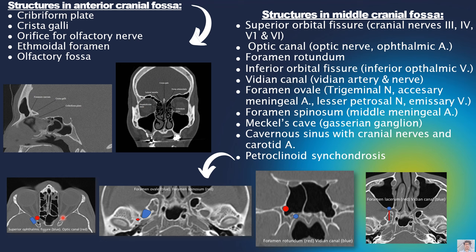The superior orbital fissure gives passage to the third, fourth, V1 division, and sixth cranial nerves. On axial CT section, the foramen ovale is shown in blue and foramen spinosum in red. The foramen ovale transmits the mandibular nerve, accessory meningeal artery, lesser petrosal nerve, and emissary vein. The foramen spinosum transmits the middle meningeal artery.